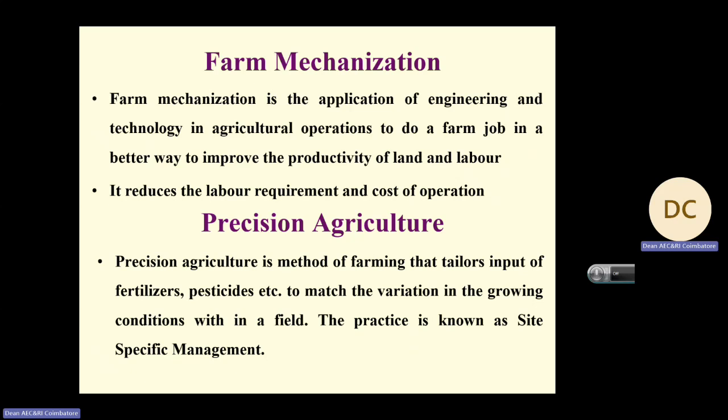In engineering degree programs, accuracy is maintained. A simple example: if a car has to turn two degrees, it will turn exactly two degrees. That is because we are controlling all the variables.